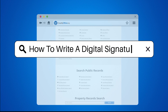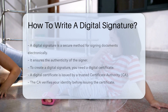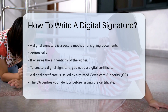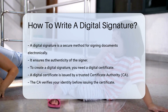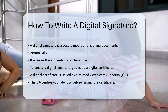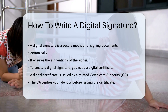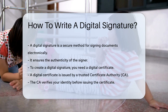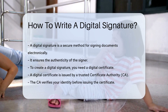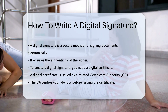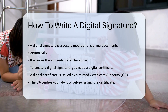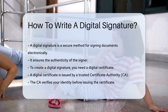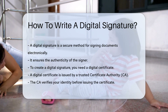How to Write a Digital Signature. A digital signature is a secure way to sign documents electronically. It ensures the authenticity of the signer. To create one, you need a digital certificate. This certificate is issued by a Trusted Certificate Authority, or CA.